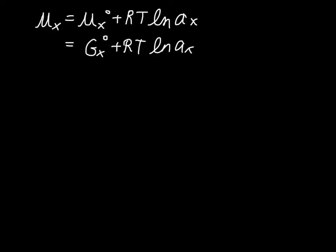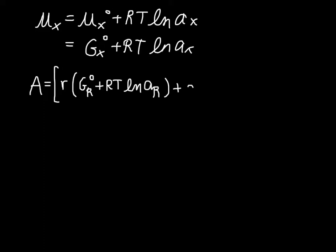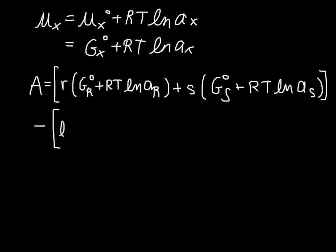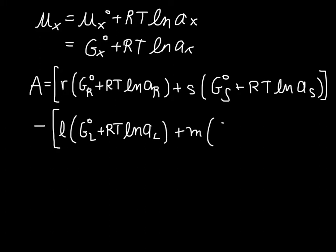We're going to make this substitution for each of the terms in the affinity equation, so that we end up with the following. The affinity equals little r times the expanded equation for species R, plus little s times the expanded equation for species S, and then subtract the same for species L and species M.